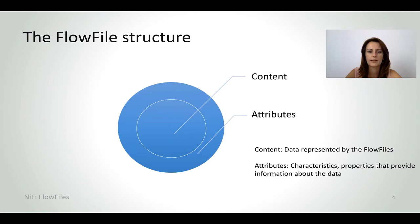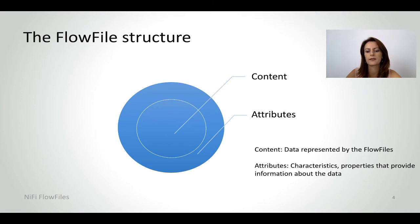A flow file is not just the content. A flow file is composed of the content and the attributes. The content is the data itself represented by the flow file, and the attributes are the characteristics and different properties that provide information about the data.